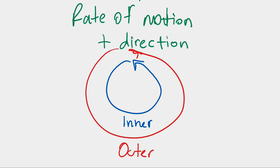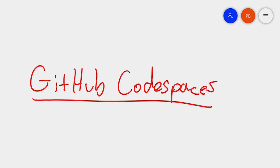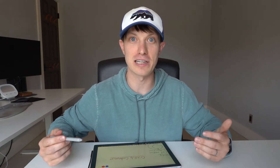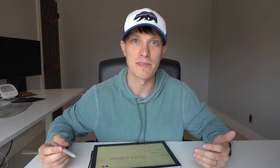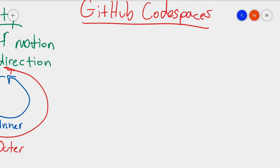Let's jump into some of the announcements today and see how they increase our team's velocity. First, let's start with GitHub Codespaces. One of my biggest pain points as a developer is configuring my environment — how do I get the right things on my machine, make sure my machine has the right performance and size to handle all the workloads I need, and make sure everything I'm installing doesn't conflict with each other as a full-stack developer? This is where GitHub Codespaces comes in.